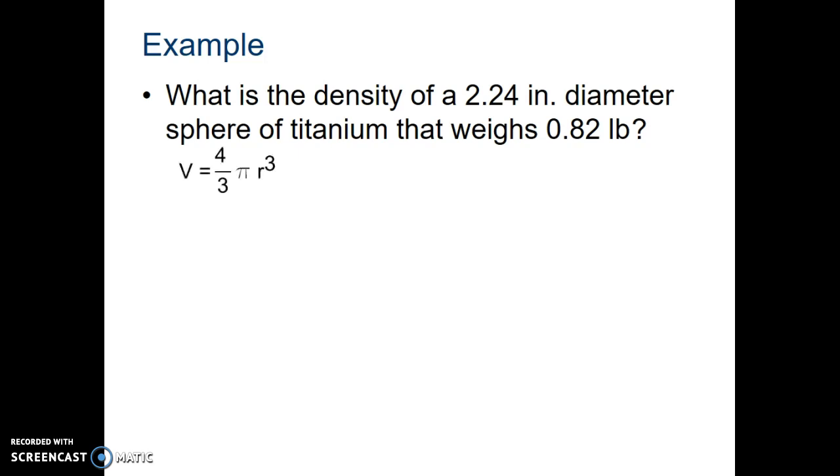We're going to start off with the volume. 2.24 inches for a diameter means we've got to cut it in half. We should have then half of that is 1.12. We're going to take that and we're going to cube it. We're going to take the 2.24 and cut it in half to get 1.12. We are going to cube that and then multiply by pi, then multiply by 4 thirds. And that ends up giving us a complete volume of that sphere of 5.88 cubic inches.